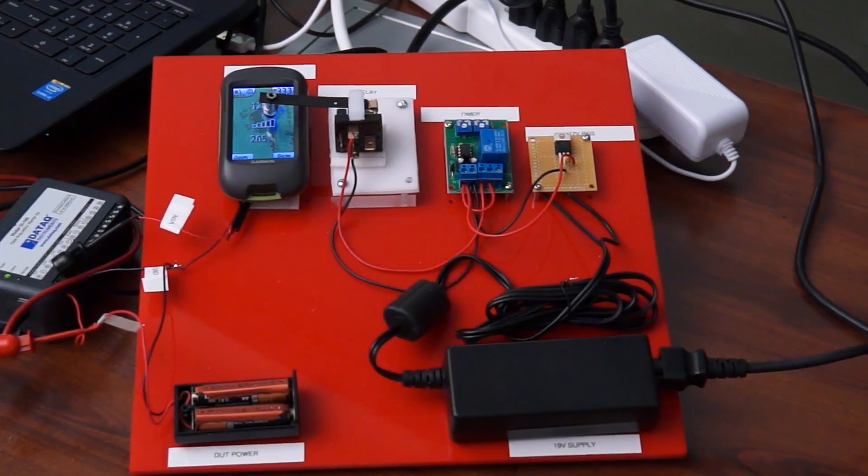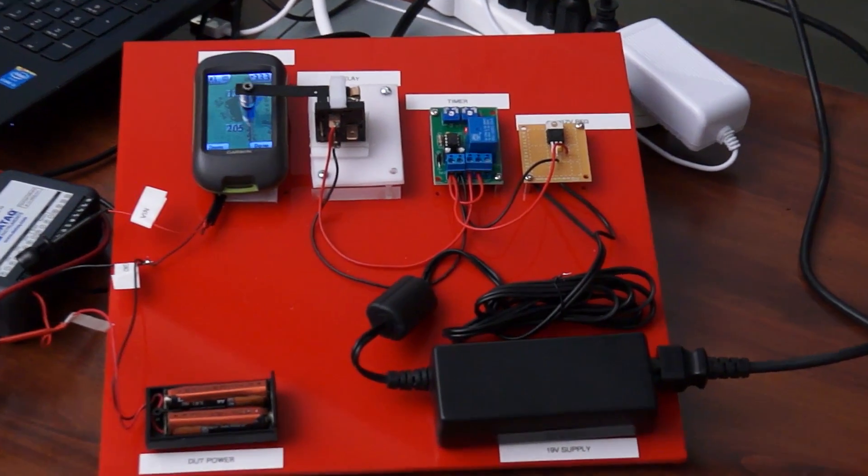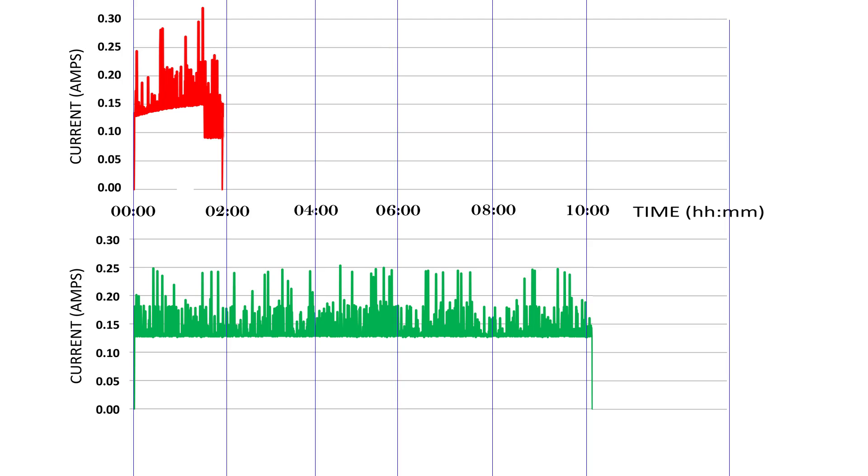However, when the batterizers are used with two fresh batteries, the GPS will operate for 10 hours and 12 minutes.